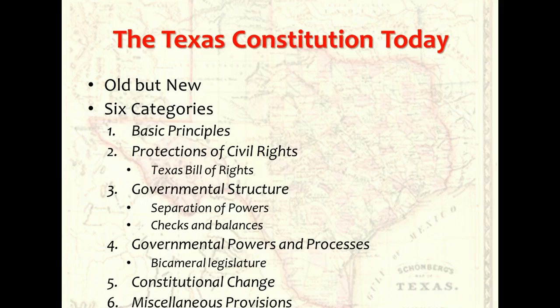The Texas Constitution today. The present-day Texas constitution is over a hundred years old, but it is also very new. Hundreds of amendments have been proposed since 1876, and many have been adopted. The vigor with which the amendments are offered, debated, and then either approved or rejected, shows how alive the constitution remains. Like all state constitutions, the Constitution of Texas can be described in terms of six general categories: basic principles, civil rights, governmental structure, governmental powers, processes for change, and miscellaneous provisions.